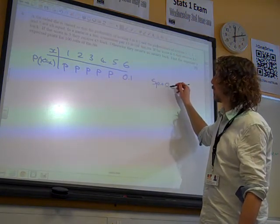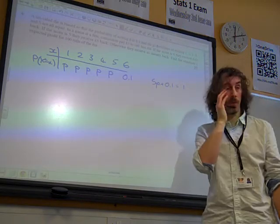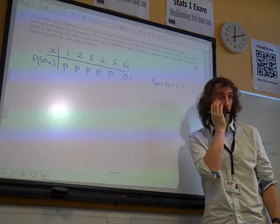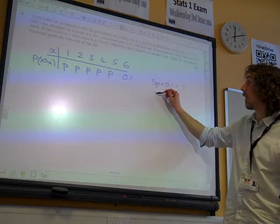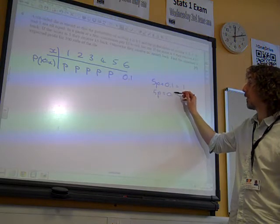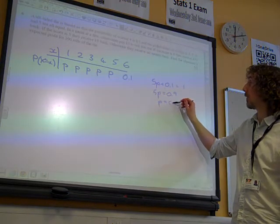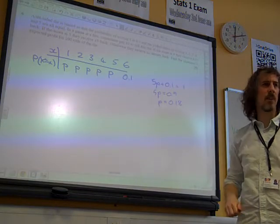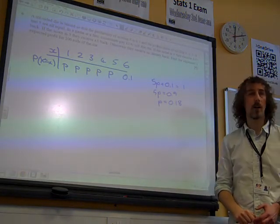So, 5p plus 0.1 is equal to 1. Which, if we rearrange that, gives us 5p is 0.9. So, p is 0.18. If you divide 0.9 by 5, we get 0.18.